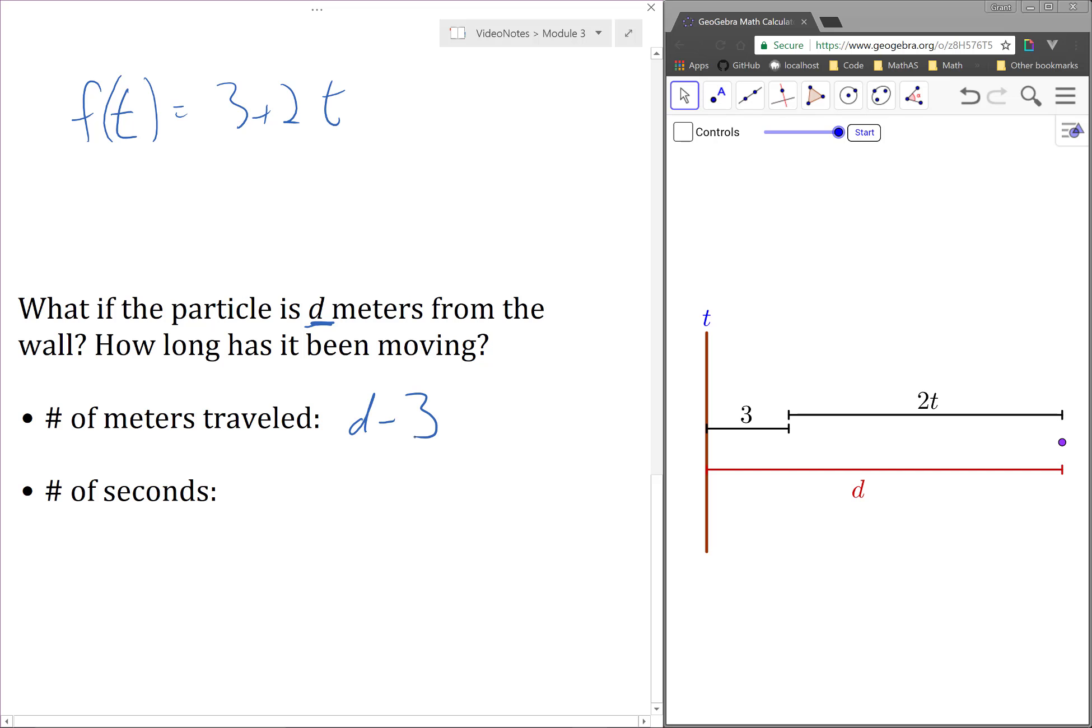Since the particle moves at a constant speed of 2 meters per second, if it's traveled d minus 3 meters, then it's been traveling for half of that. So the number of seconds the particle has been moving is equal to d minus 3 divided by 2.